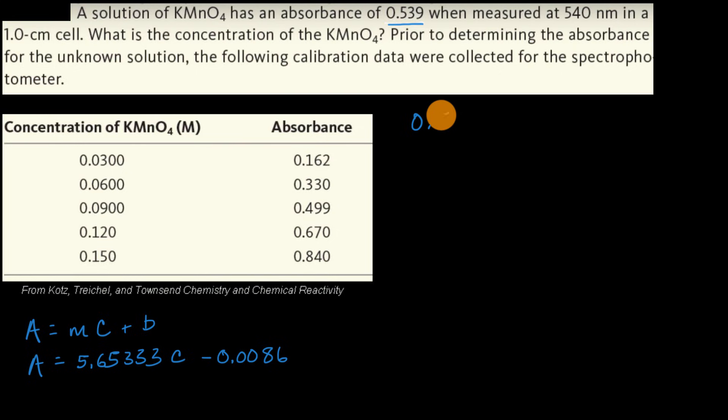So we know that 0.539 equals 5.65333 C minus 0.0086.